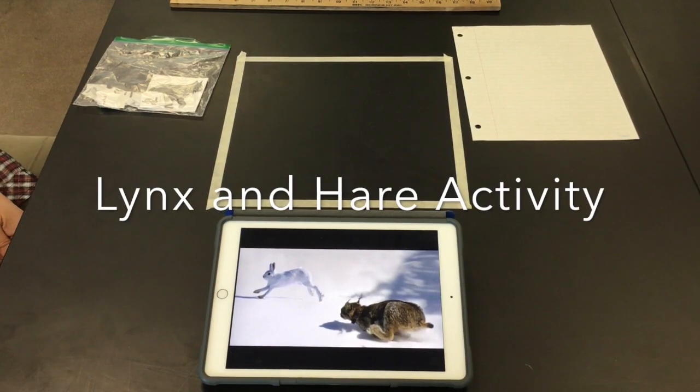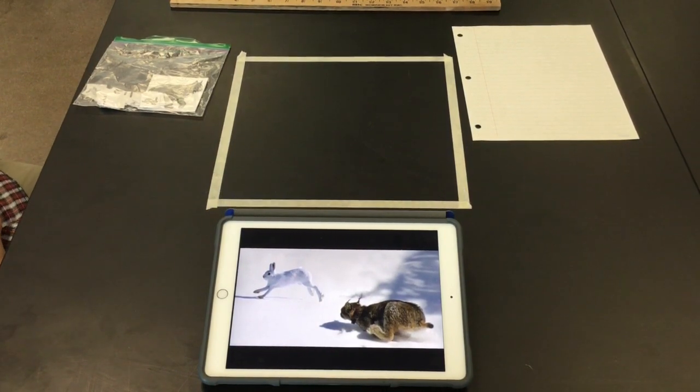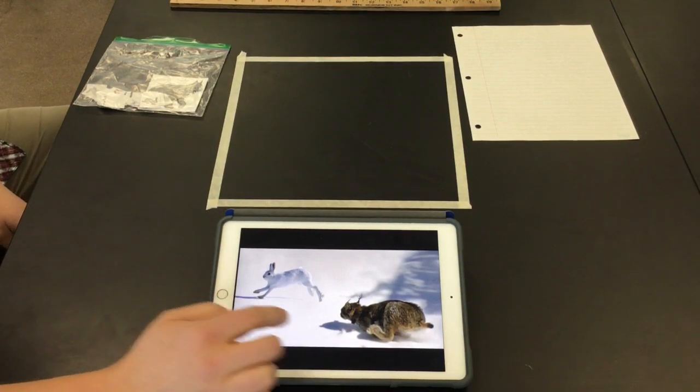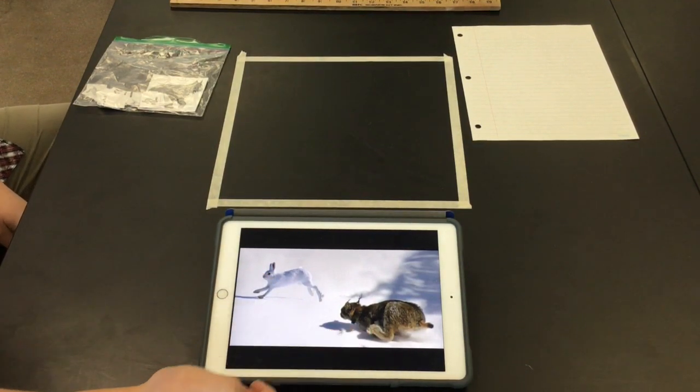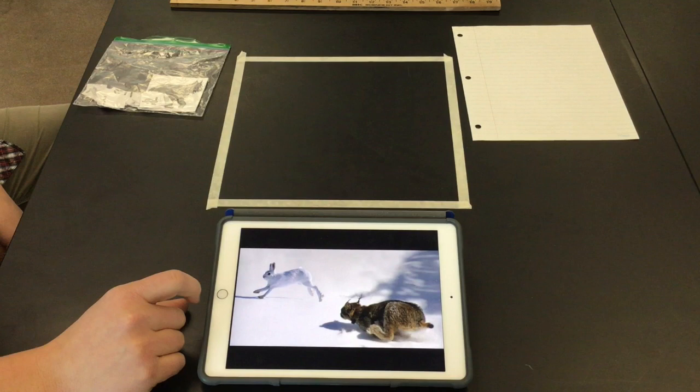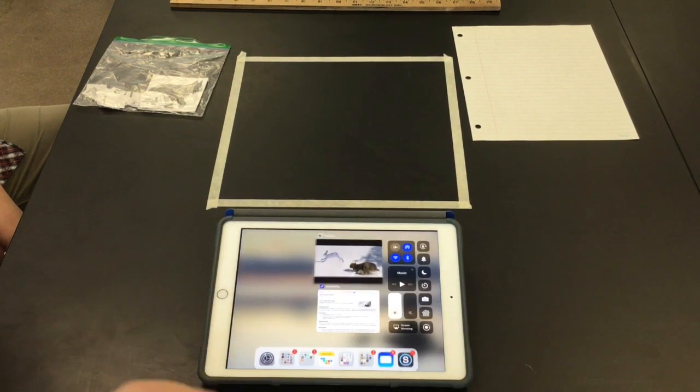Hi there biology students. It's Mr. Howard and Mr. Buss here. We're going to walk through the lynx eats the hare population density simulation. So here's a snowshoe hare and here's a Canadian lynx. Those are the two organisms we're going to be modeling during this simulation.